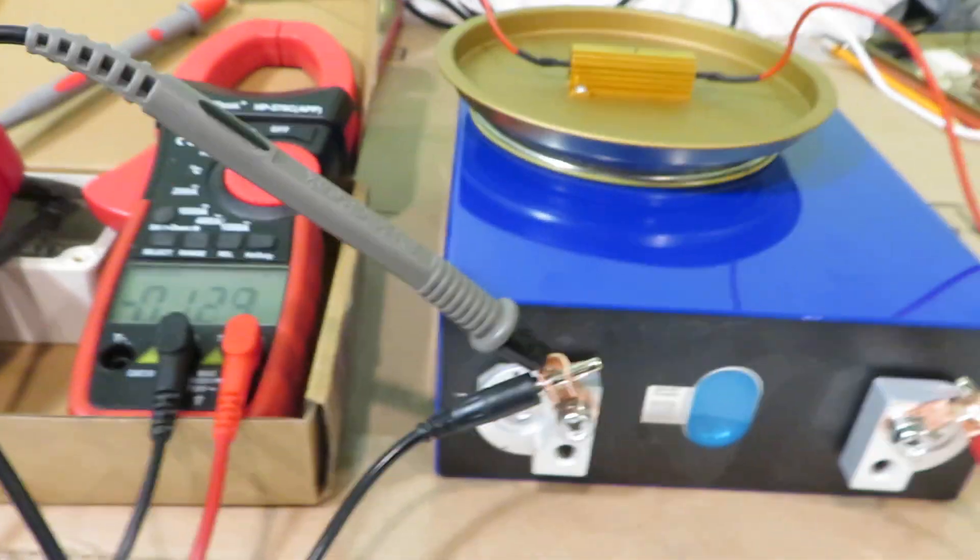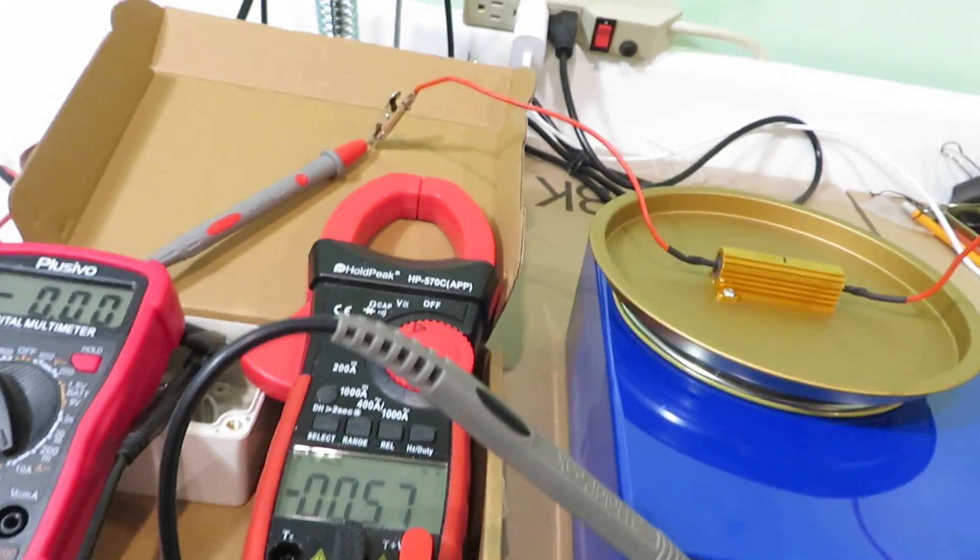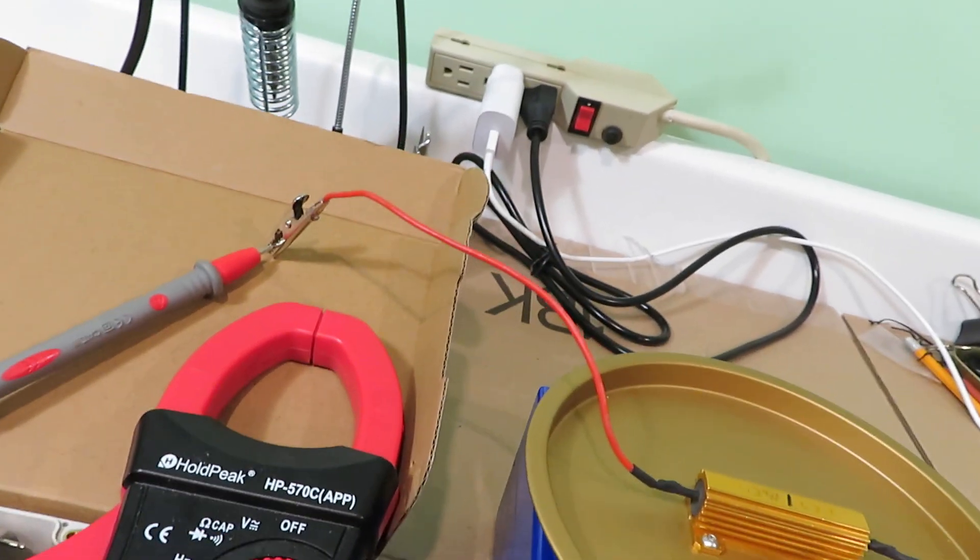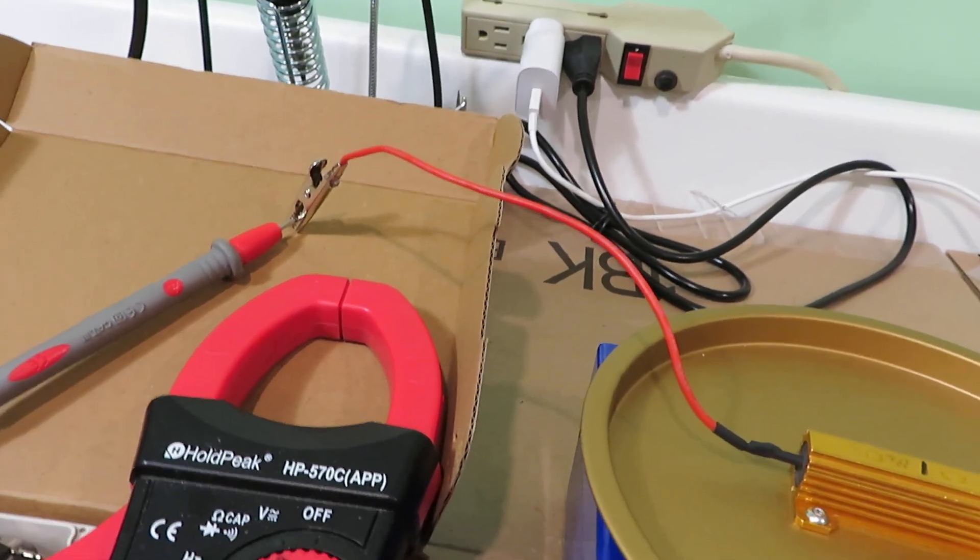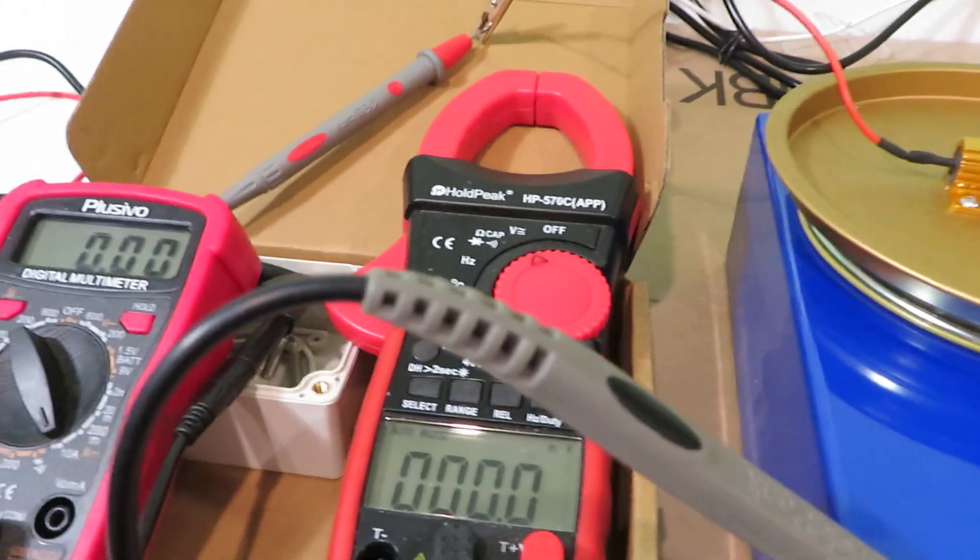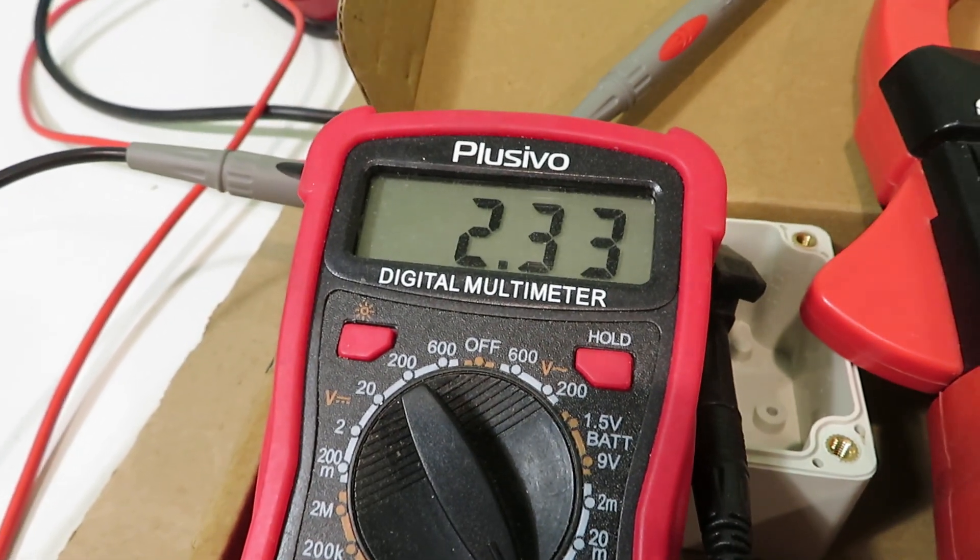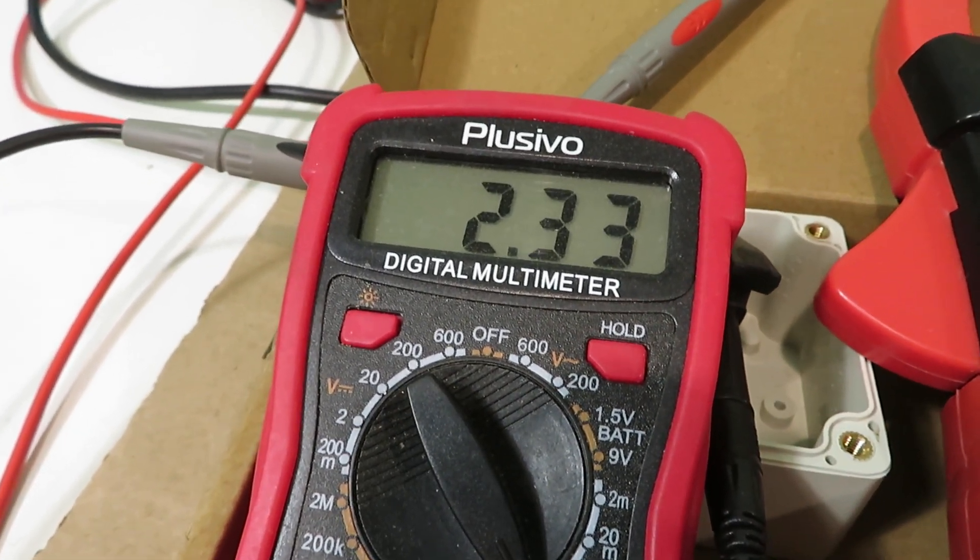Now let's measure the cell voltage with a one ohm resistor. The current going through the cell. Let me touch here. And now it's drawing 2.33 amps.